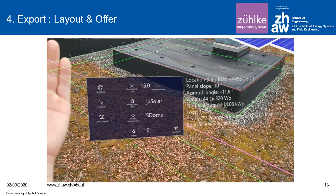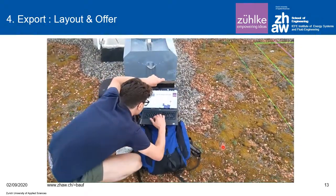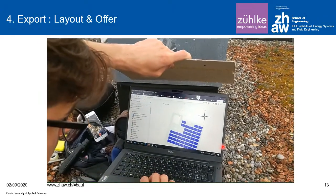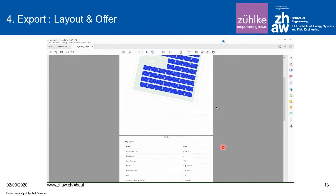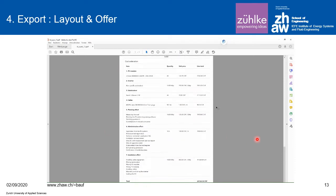Now the layout is done and we export all the data. We see this is a 14 kilowatt PV installation — the planning, orientation, percentage of losses, and the annual output in kilowatt hours. We select the export button and transfer the data to a computer or mobile device as a PDF document, which can also be used with other software tools.